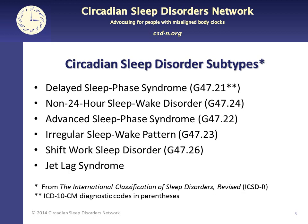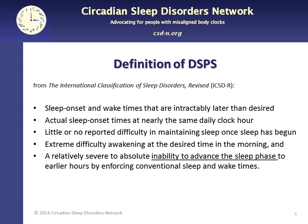The ICSD International Classification of Sleep Disorders lists six subtypes of circadian rhythm sleep disorder. We'll focus mainly on delayed sleep phase syndrome and non-24-hour sleep-wake disorder. The ICSD lists these factors for diagnosing DSPS: sleep onset and wake times that are intractably later than desired; actual sleep onset times at nearly the same daily clock hour; little or no reported difficulty maintaining sleep once sleep has begun; extreme difficulty awakening at the desired time in the morning; and a relatively severe to absolute inability to advance the sleep phase to earlier hours by enforcing conventional sleep and wake times.